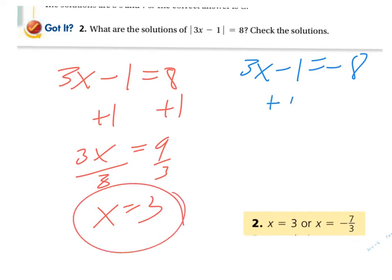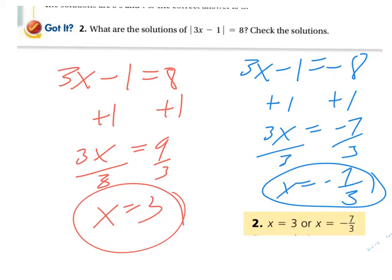And for the other one, again, add your 1. 3x equals negative 7. Divide off your 3, and x is negative 7 thirds. Remember, you are welcome to leave answers as improper fractions as long as they are reduced.